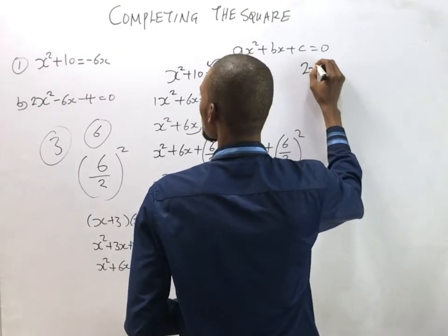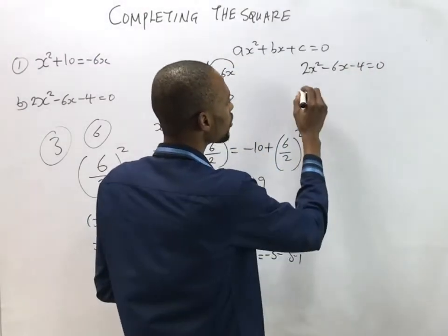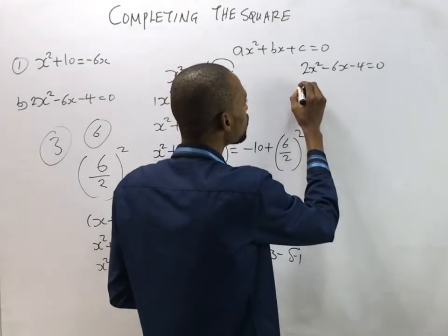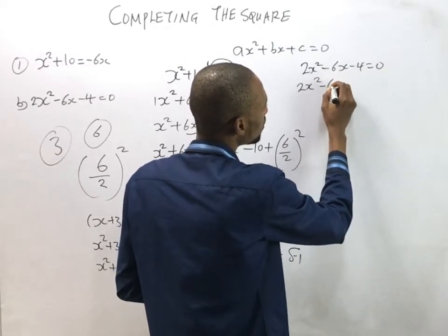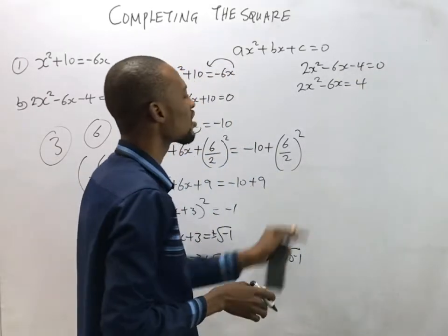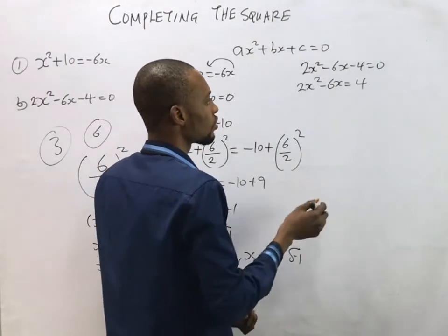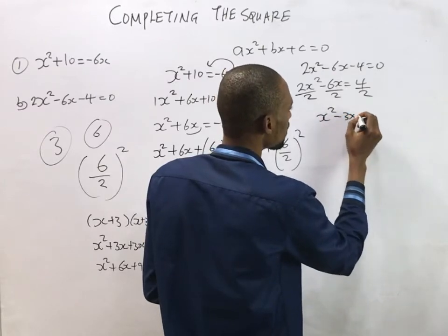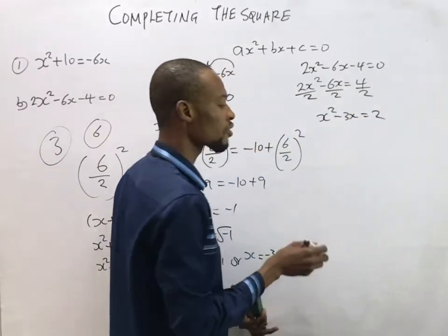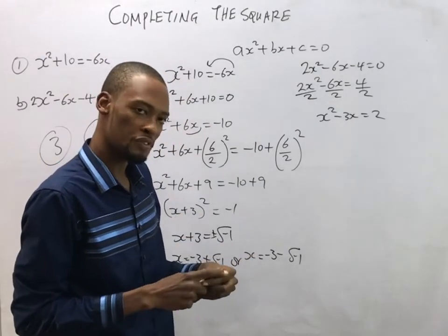The second equation is 2s² - 6s - 4 = 0. First, move the constant: 2s² - 6s = 4. Since the coefficient of s² is 2, not 1, we divide both sides by 2 to get s² - 3s = 2. Whenever the coefficient of s² is not 1, divide throughout by that coefficient so that s² stands alone.